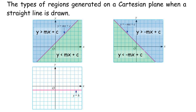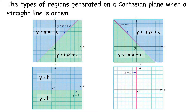Points that lie on the straight line satisfy the equation y equals h. Points located in the region above the straight line satisfy y greater than h. Points located in the region below satisfy y less than h. Points that lie on the straight line satisfy x equals k. Points located in the right region satisfy x greater than k. Points located in the left region satisfy x less than k.